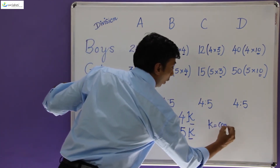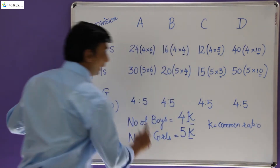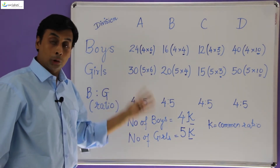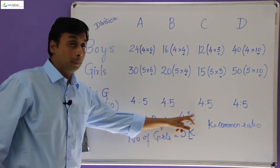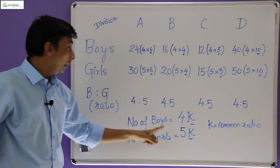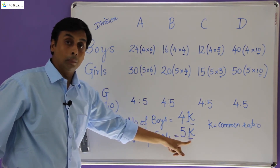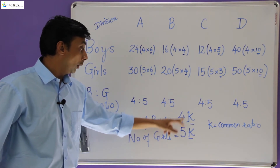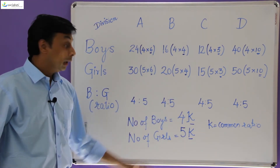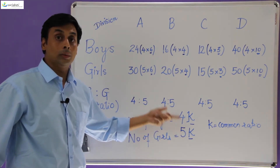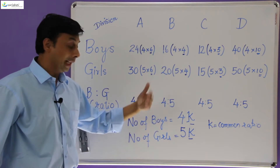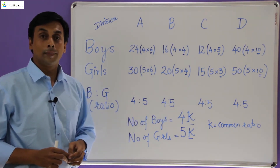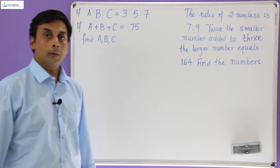So in this case, K is called the common ratio. Just saying that the ratio of boys to girls is 4 is to 5 does not give us a good idea of how many boys and girls there are, but we know the number of boys is 4K and the number of girls is 5K. That common number K is called the common ratio, and it will help us find the actual number of items provided the ratios are known. In the next section I will show you how to solve problems using common ratio.